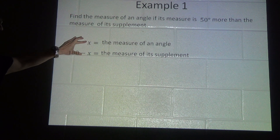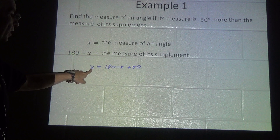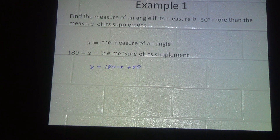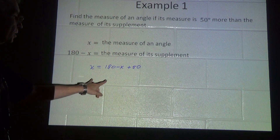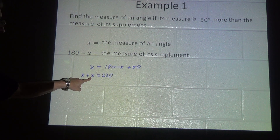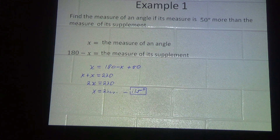These two angles added together will add up to 180. We know x is the angle we're looking for, so it's equal to 180 minus x plus 50. We combine like terms and move the x to the other side. This gives us x plus x equals 230, so 2x equals 230. Dividing both sides by 2 gives us x equals 115 degrees. That's how you do one of these — this is a fairly simple one.